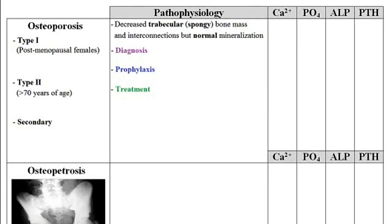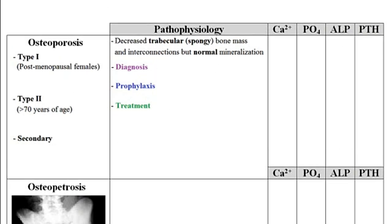In this video, I would like to go over the pathophysiology of different bone disorders and then discuss how the lab values for serum calcium, serum phosphate, alkaline phosphatase, and parathyroid hormone will be affected in any one of these conditions. Before being able to discuss these conditions, I would like to go over the physiology of bone formation as well as bone structure, and the cells and hormones that are involved.